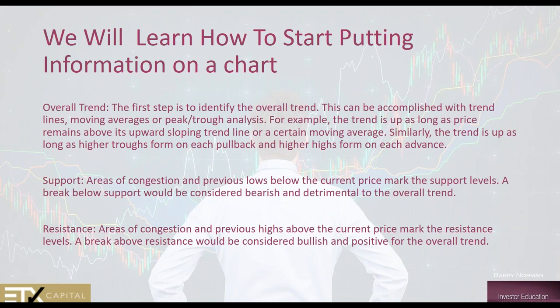We will learn how to start putting information on a chart. Next week, when we learn basic charts and graphs, we'll learn how to use a chart. Then over the next several weeks, we'll start putting information on — things like trend lines, support and resistance, and volume on a chart — which are critically important. Even at an advanced level, there are completely automated trading systems that use just support and resistance and trend lines, because a bounce off a trend line or moving back up to a support line can be a simple, profitable trade if you figure it out right.